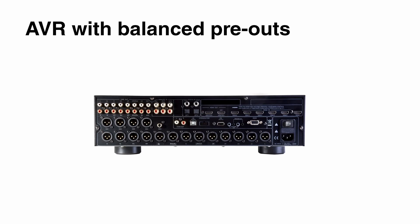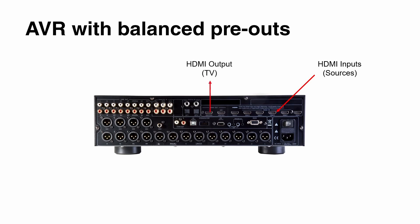How does it look on the back of an AVR — how do you connect this at home? First, you have different HDMI inputs where you connect all your source devices, such as your streaming player, Blu-ray player, or CD player. On the HDMI output, that's where you connect your TV or projector. AVRs that come with balanced pre-outputs can be used to connect directly to active Genelec speakers instantly without converting anything — a very simple and straightforward workflow.